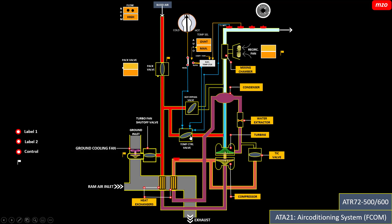Let's open the mixing control valve and open the hot bypass valve a little — not too much from the temperature controller. This is very clear: the hot air mixes in order to get the conditioned air. The hot air mixes with the very cool air at the turbine outlet.